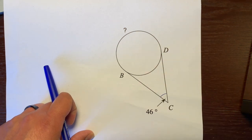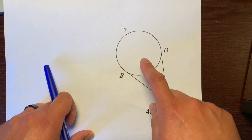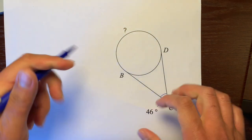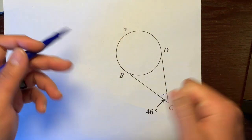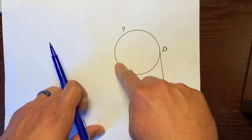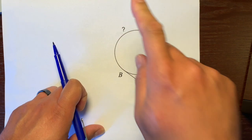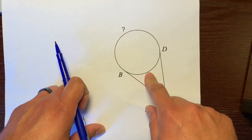But we don't have any information about this angle right here. But we can figure that out. Let's just say, for example, if this arc was, say, 1 degree, how would we figure out this arc right here?